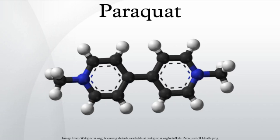Paraquat is often used in science to catalyze the formation of reactive oxygen species, more specifically the superoxide free radical. Paraquat will undergo redox cycling in vivo, being reduced by an electron donor such as NADPH, before being oxidized by an electron receptor such as dioxygen to produce superoxide, a major ROS.